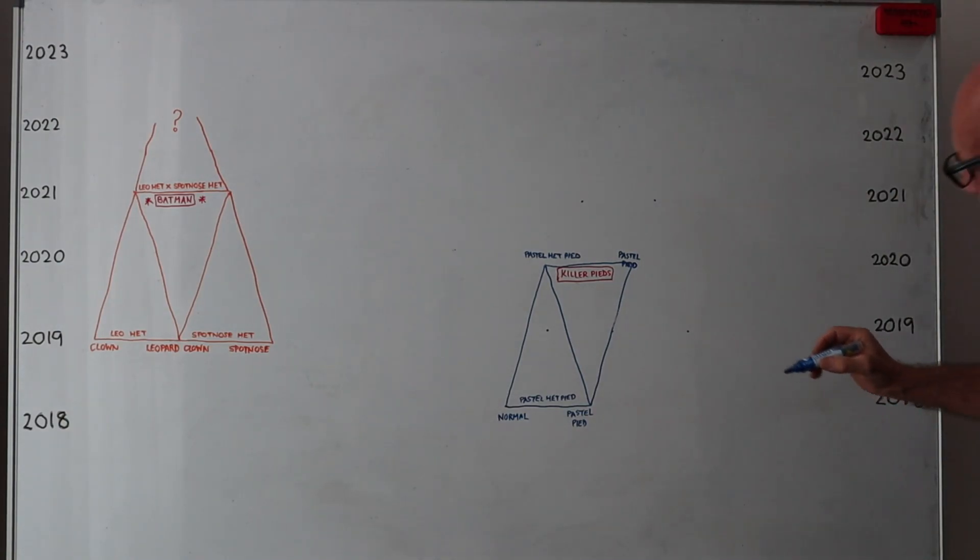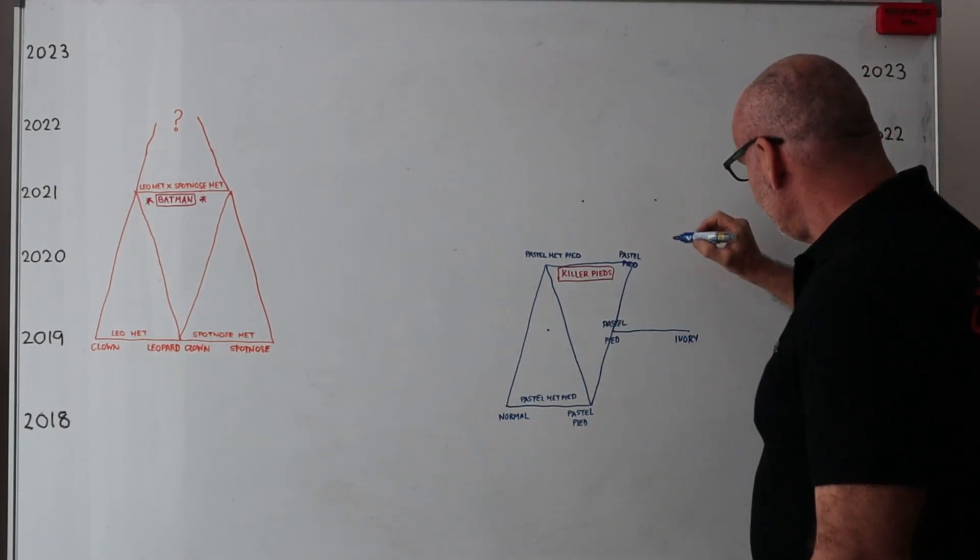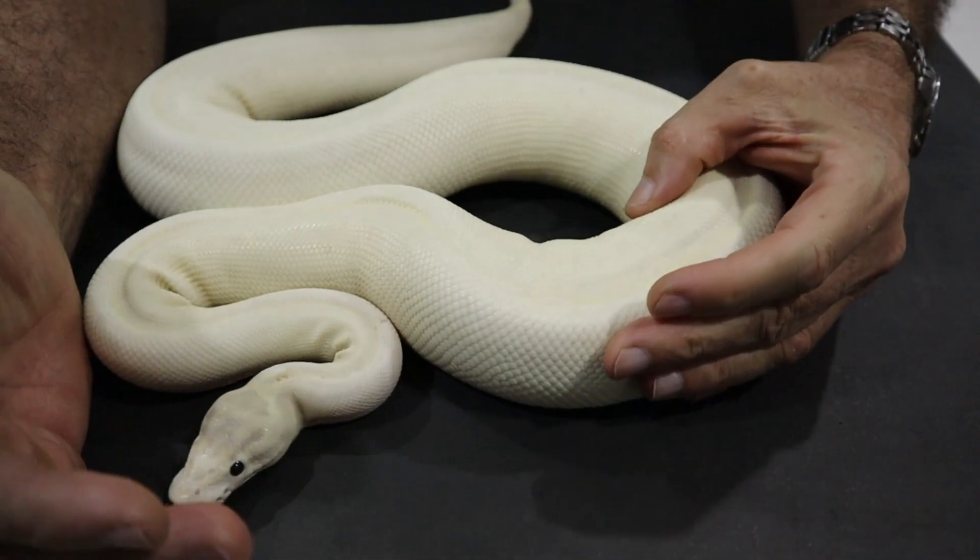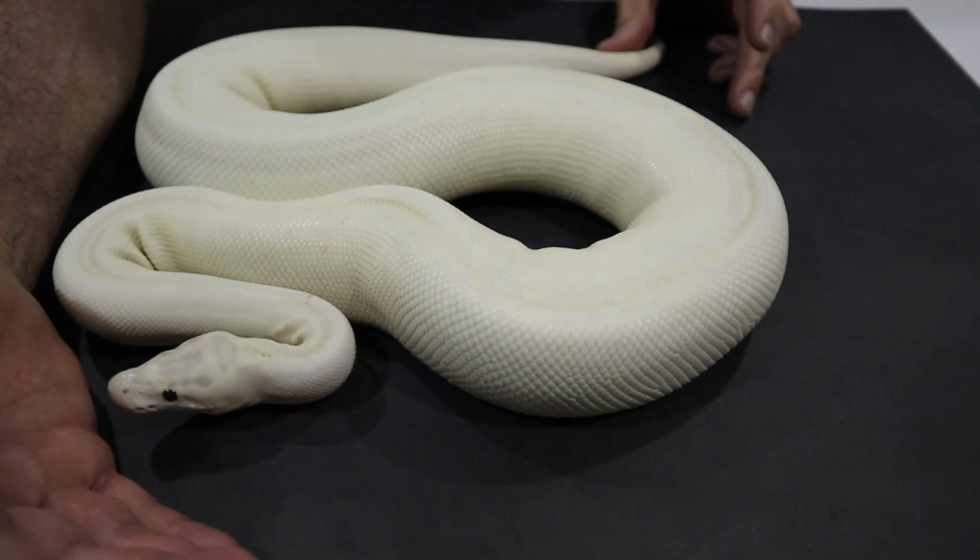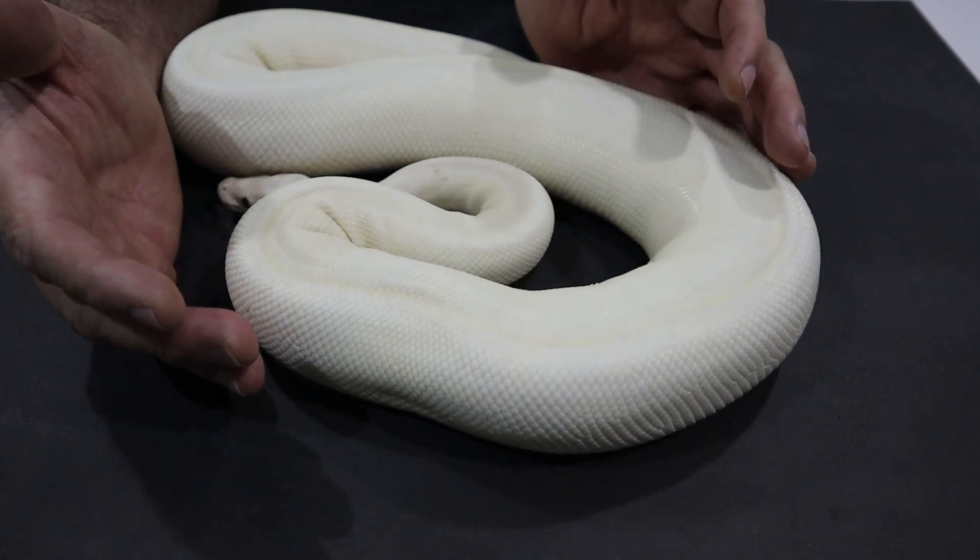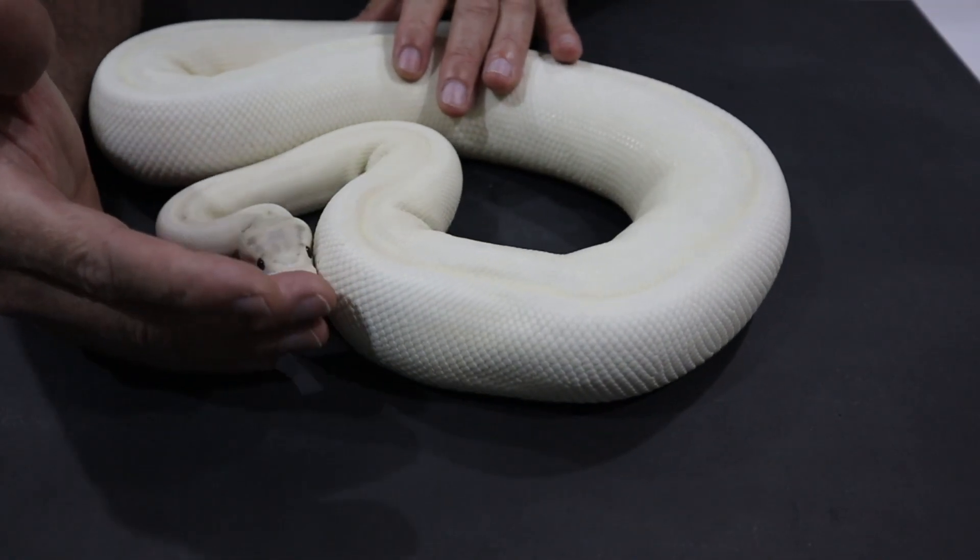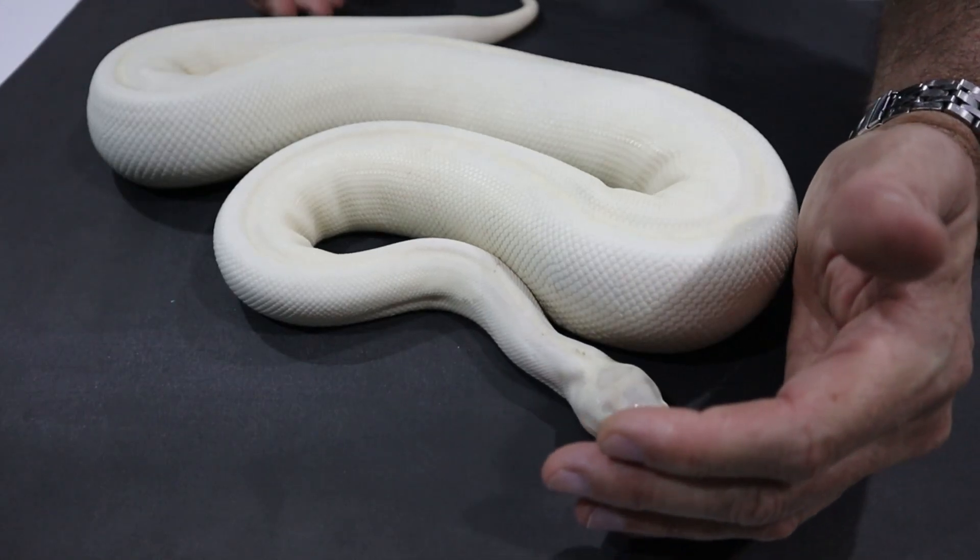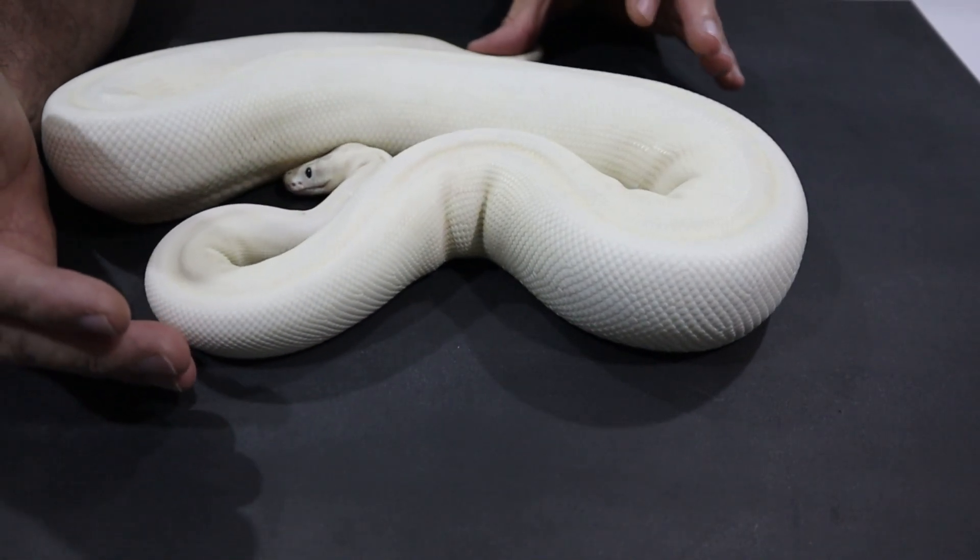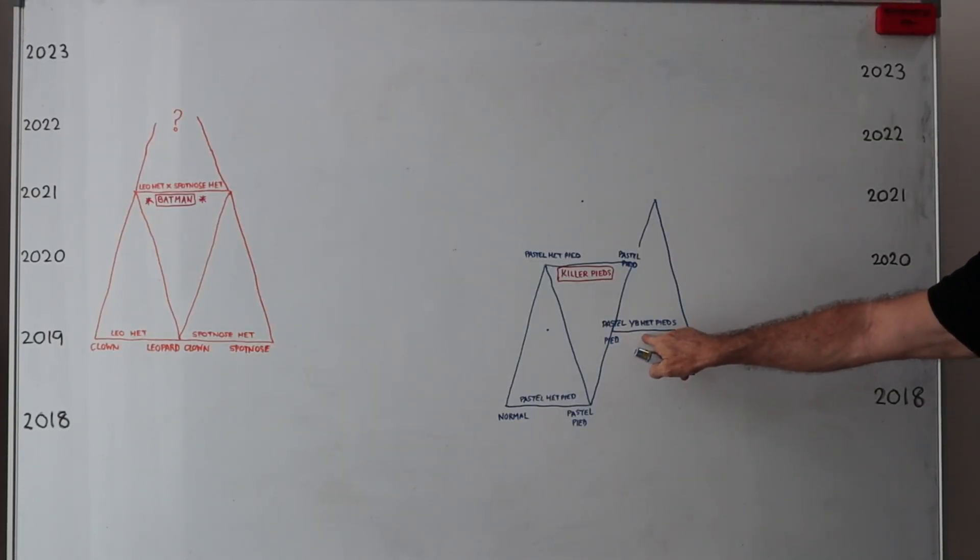And this year, I'm breeding the same pastel pied male to an ivory female that will produce yellow belly het pieds. This girl here is my leopard ivory, who has also been bred to Clint this year. All her offspring should be yellow belly, 100% het for pied. So this is the first stage in my pumpkin pied project. This is the leopard ivory or silky way that I'm using again with the pastel pied male. So this year I'm attempting to produce yellow belly het pieds.